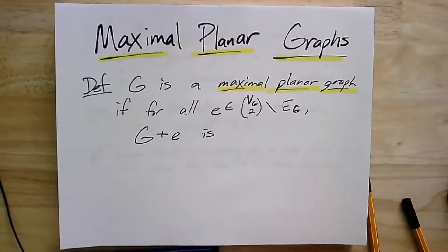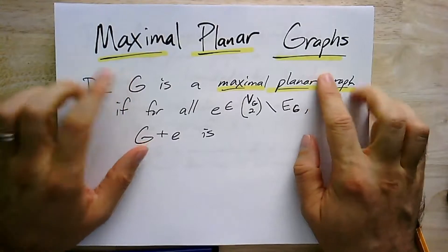So we're going to continue our discussion of Euler's formula in the plane, and we're going to put it to work. So the main topic here, we're going to talk about maximal planar graphs.